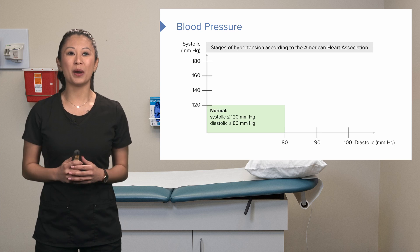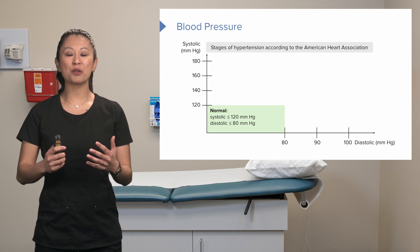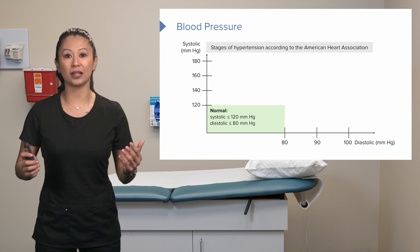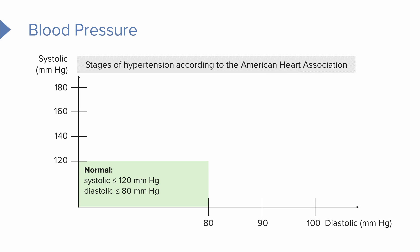The gold standard for blood pressure guidelines is the American Heart Association. They set guidelines for what we consider hypertension — simply, high blood pressure. A normal blood pressure is 120 over 80: systolic is our top number, diastolic is our bottom number. Anything above 120 systolic or over 80 diastolic, when we start creeping up, we call prehypertension.